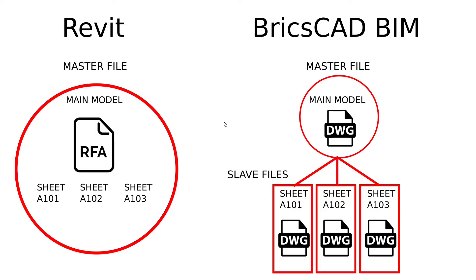You can see this workflow in the flowchart here. In Revit, there is one model file with all the components, views, sheets, and annotations — this is the database-based workflow. In BricsCAD BIM, you have one main 3D model file and all the sheets with views are created as separate files. You can create annotations in these files, but you cannot adjust the model — you can do that only in your master 3D model file. This is the file-based workflow.